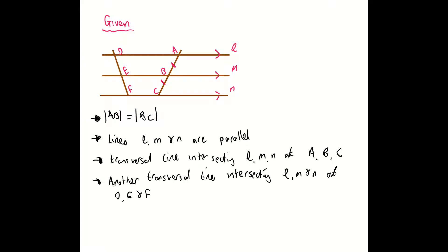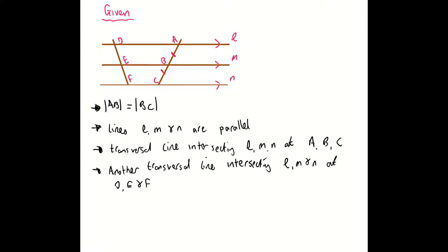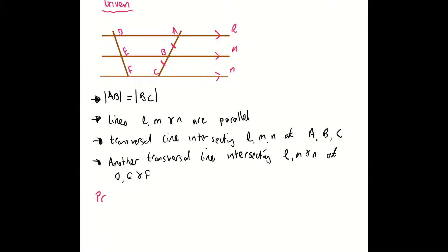Next thing we're going to write down is what we actually want to prove — what's the aim of the game here? What we need to prove is that the length D to E is the same as the length from E to F. So the aim here is that we want to prove that the length DE is equal in length to EF.